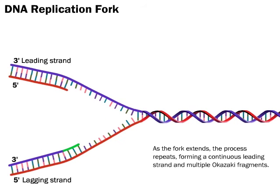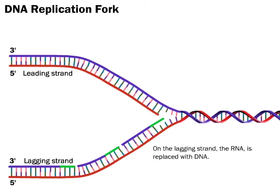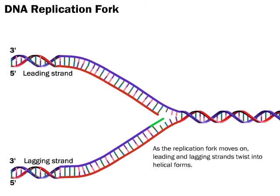As the fork extends, the process repeats, forming a continuous leading strand and multiple Okazaki fragments. On the lagging strand, the RNA is replaced with DNA, and the DNA fragments are joined as the replication fork moves on. Finally, the leading and lagging strands twist into their helical forms.